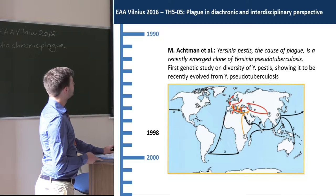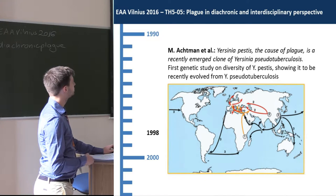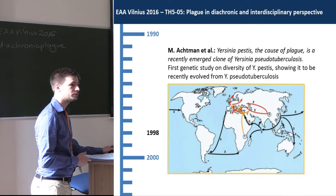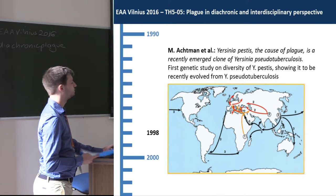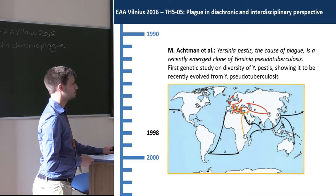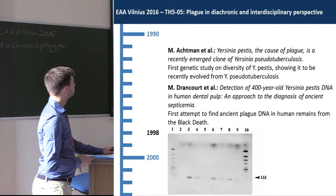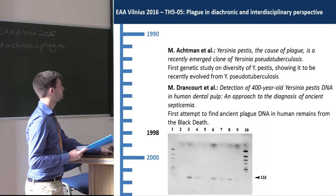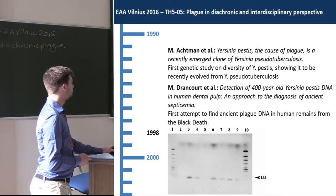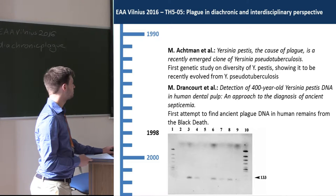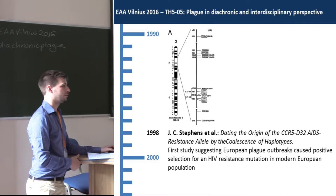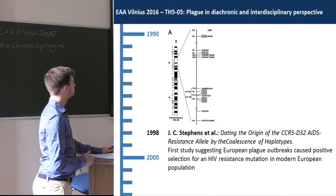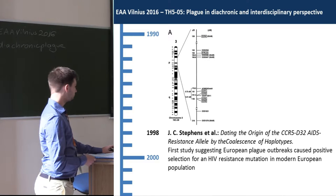In 1998, there was a publication by Mark Achtmann showing that Yersinia pestis recently evolved from pseudotuberculosis and was responsible for the different plague outbreaks across all three pandemics. Also in the same year, we got the first attempt to find ancient plague DNA in human remains from plague deaths, and the first try to link human immunity alleles to the Black Death, by Stevens.